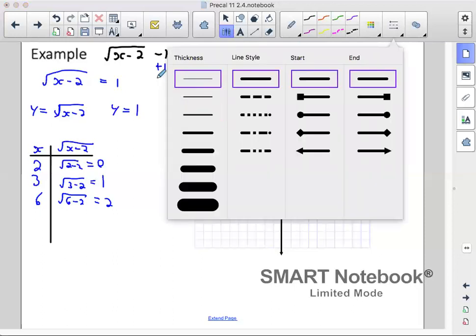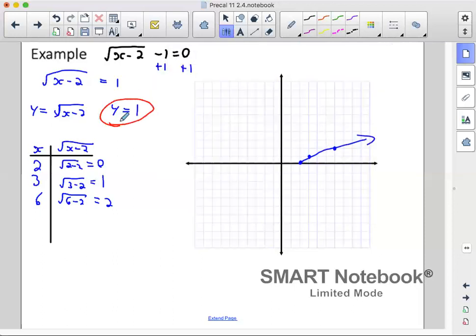Now for y equals 1, whenever you have y equals something, that's just a horizontal line at that y value. Now we're trying to find our answers where they intersect, which is right here. Therefore, we will find our x value there, which is 3.